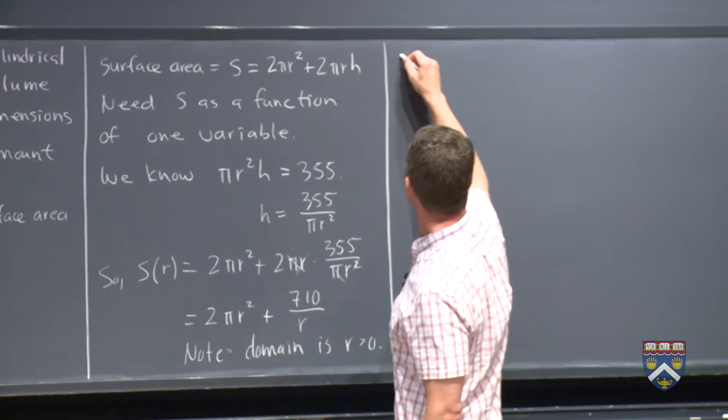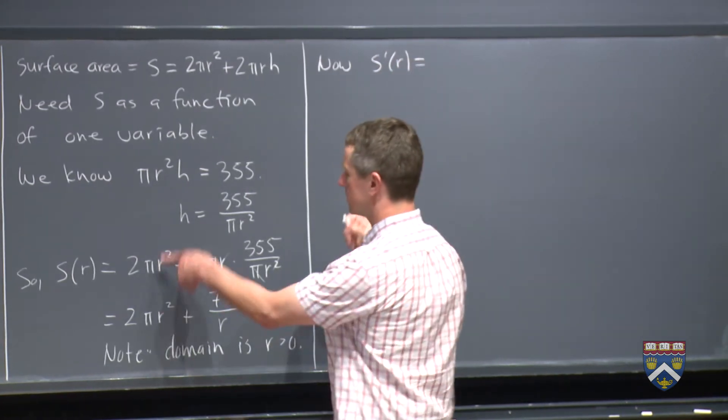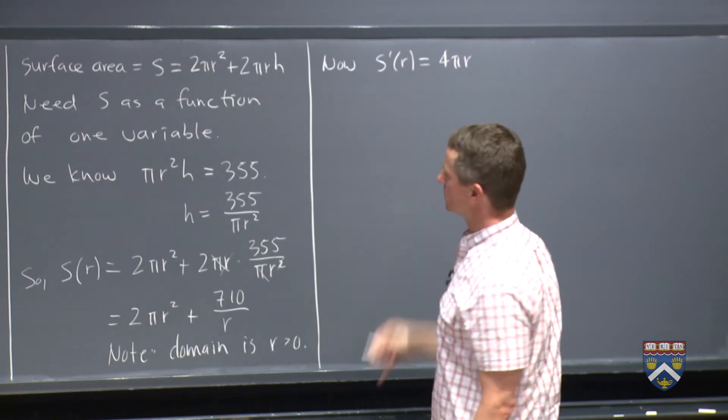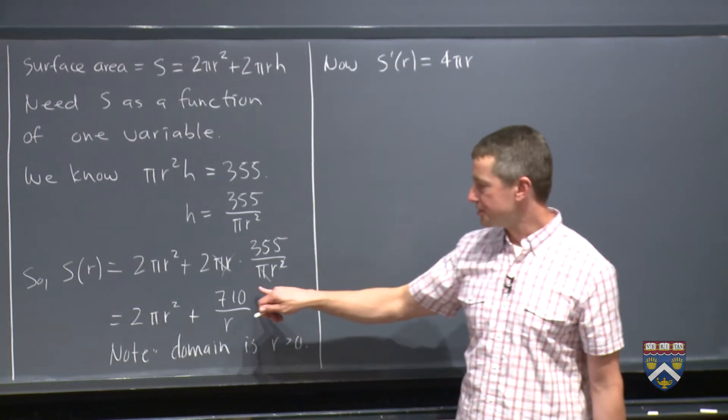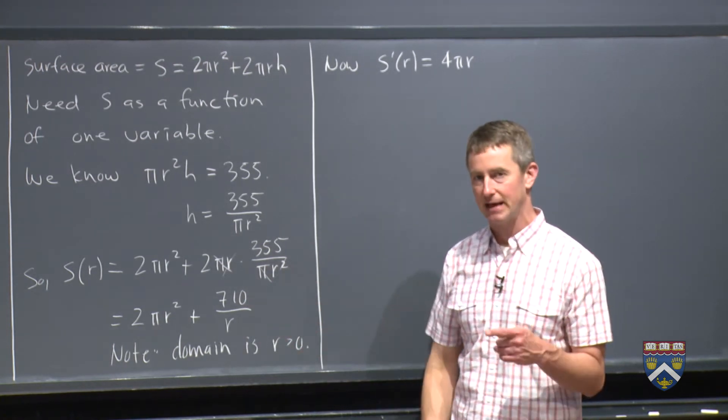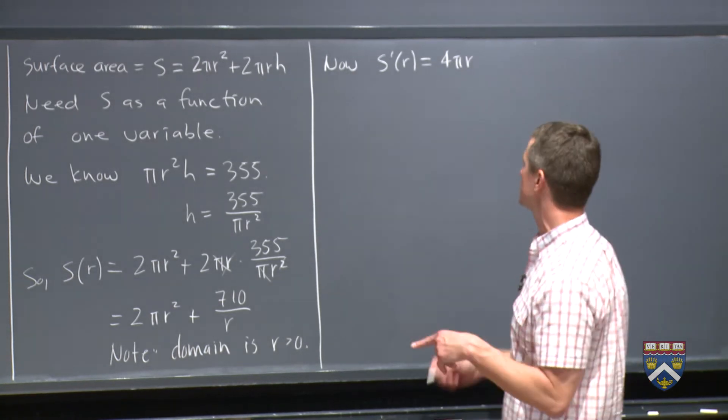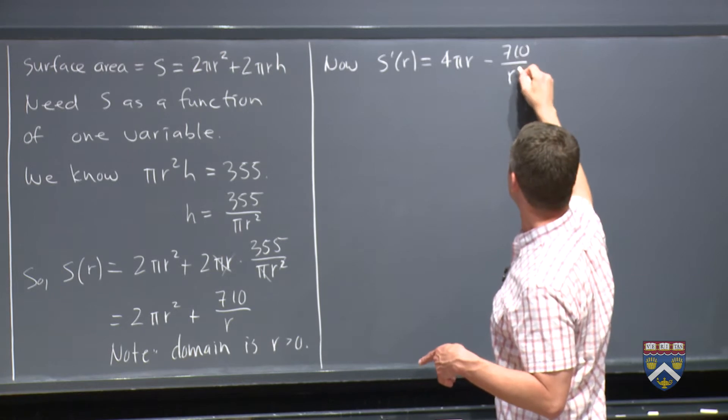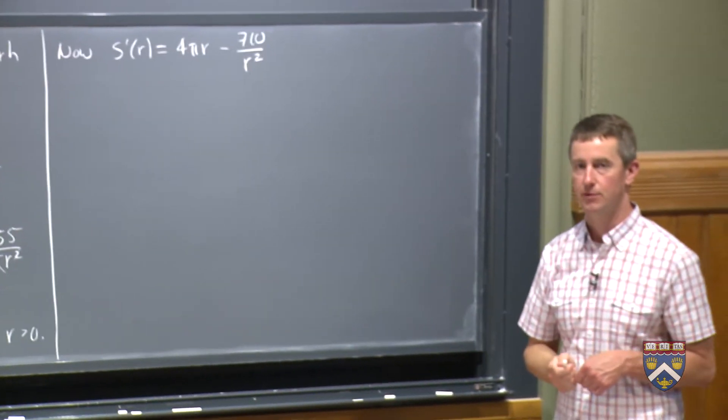So we don't have to worry about something bad happening when r is 0. Let's take the derivative. s prime of r, derivative of 2 pi r squared is 4 pi r. Do we need the quotient rule for this? We could, but we don't need it. It'll be a lot easier if we write this as what? 710 r to the negative 1. So what's the derivative of 710 r to the negative 1? Negative 710 r to the negative 2, which is the same as saying 710 over r squared. That's the same thing that you'll get if you use the quotient rule.